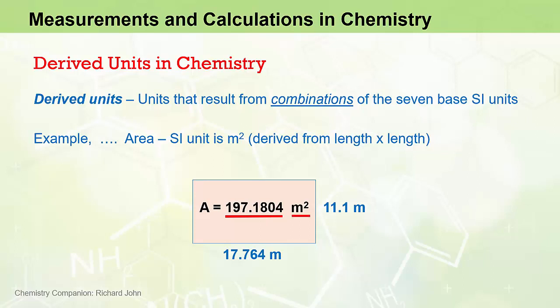The units must be treated in the same way. By multiplying metres times metres, we get metres squared as the unit, and this is something to remember. Whatever mathematical operation we perform on the magnitude of the measurement, we must also do to the unit of that measurement. The area of this rectangle is therefore best expressed as 197.1804 metres squared.